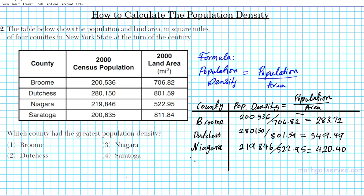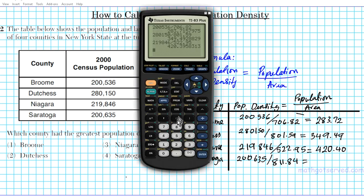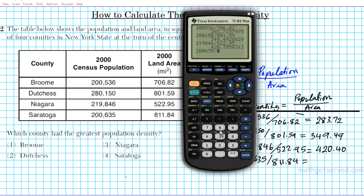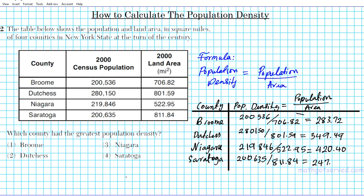The last county is Saratoga. The population is 200,635, divided by the land area of 811.84 square miles. Using the calculator: 200,635 divided by 811.84 gives us a population density of 247.14.